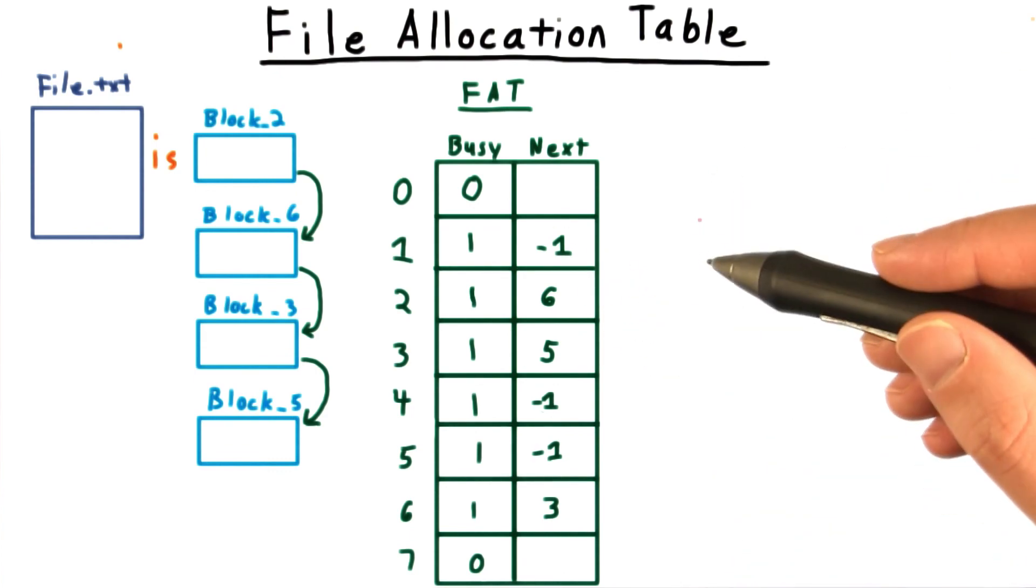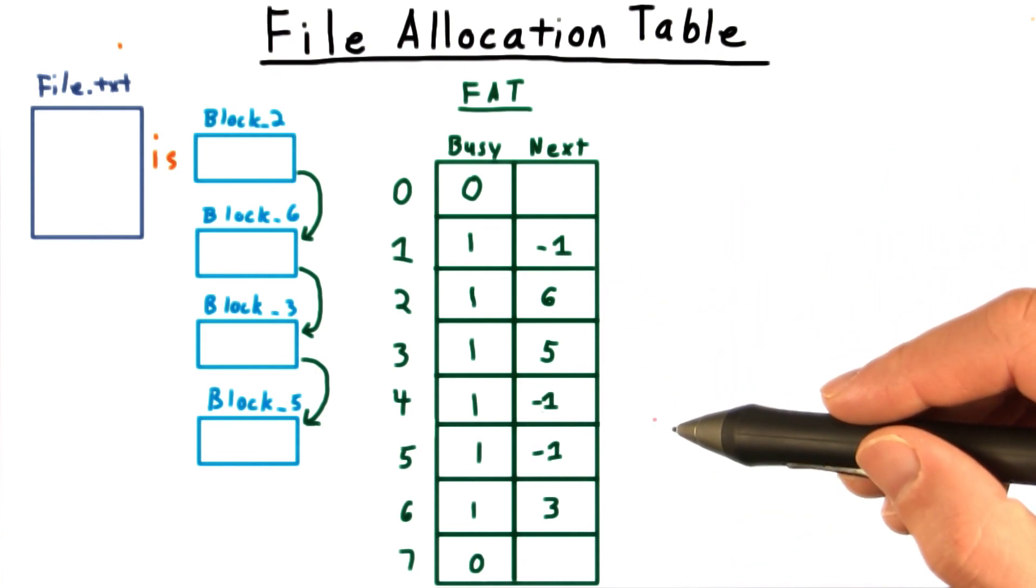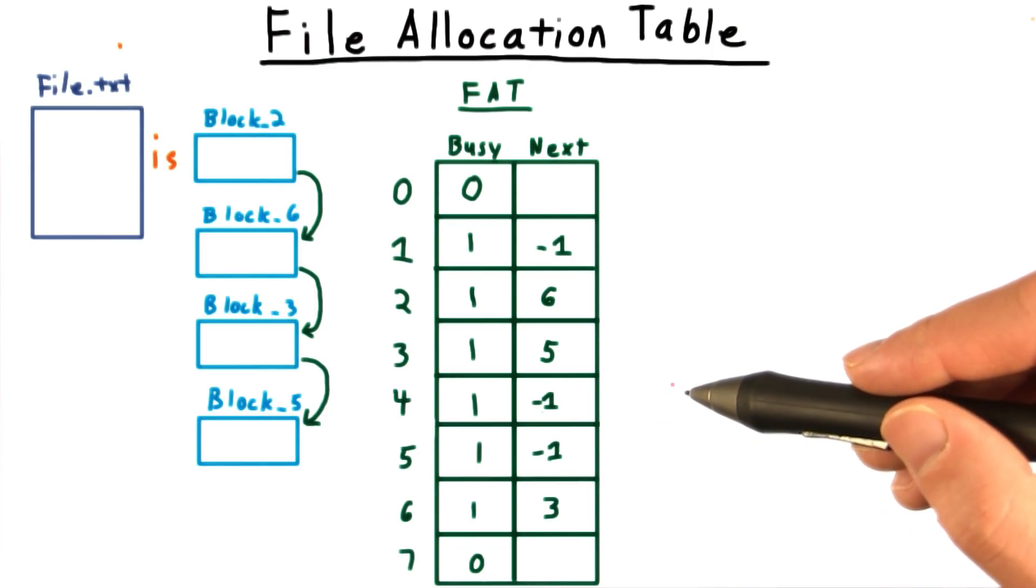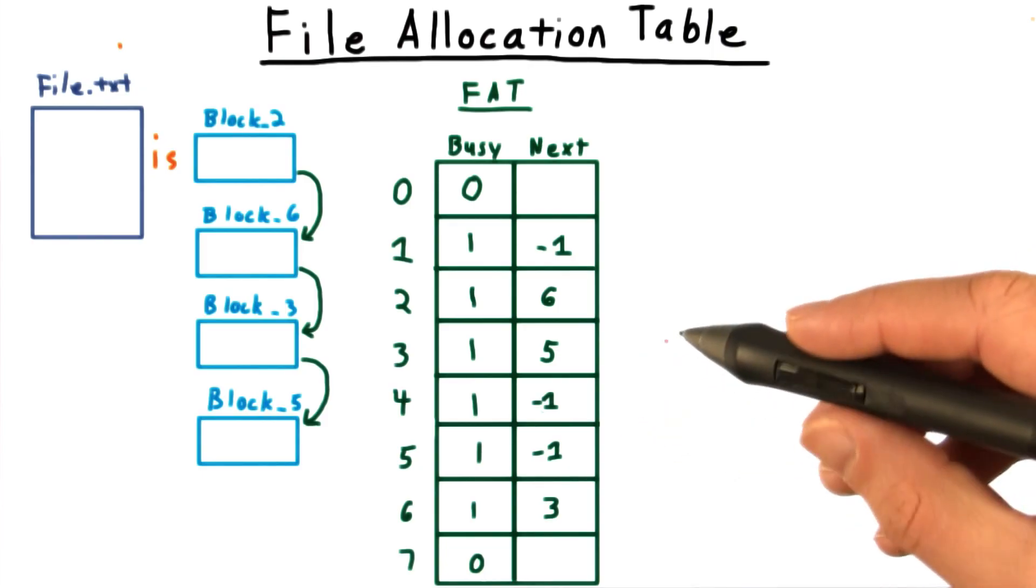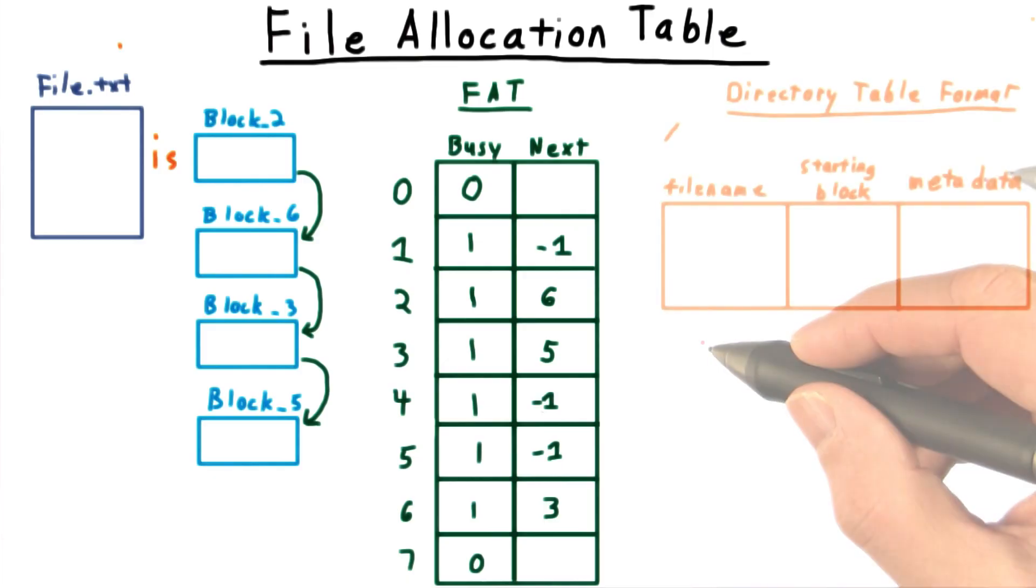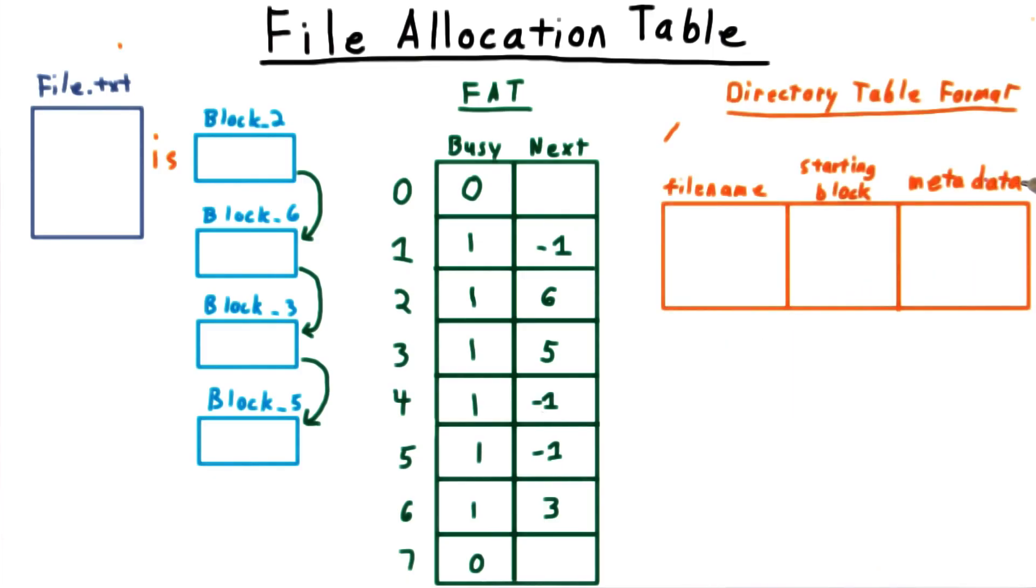So the file allocation table tells us how to glue the blocks of a file together. But it doesn't tell us where to start these chains of blocks. That is the function of the directory tables. Directories are indeed treated as files and they use something called a directory table format.